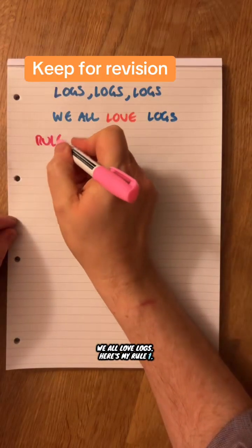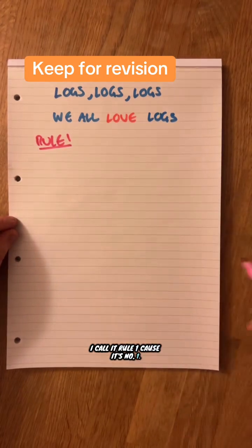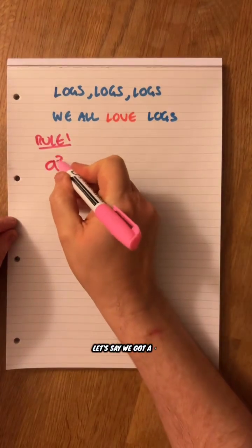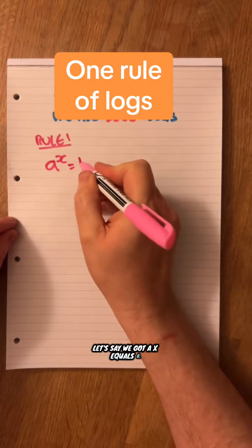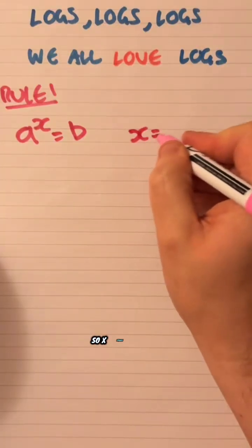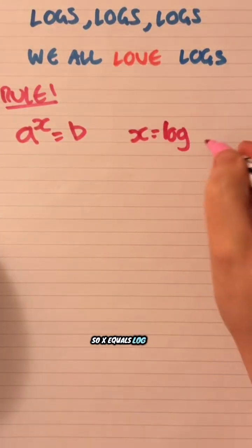Here's my rule one. I call it rule one because it's number one. Let's say we've got A^X equals B. Here's my rule one. So X equals log_a B.